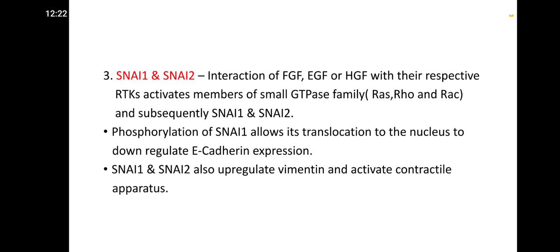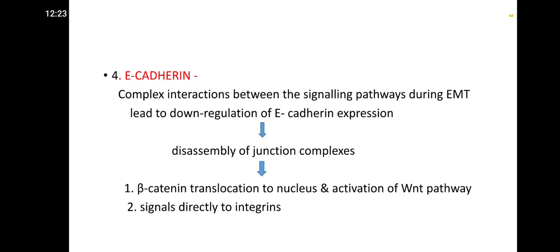Interaction of FGF, EGF, or HGF with their respective receptor tyrosine kinases activates members of the small GTPase families — Ras, Rho, and Rac — which subsequently leads to Snail-1 and Snail-2 production. Phosphorylation of Snail allows its translocation to the nucleus to downregulate E-cadherin expression. Snail-1 and Snail-2 also obligate to maintain and activate the contractile apparatus.